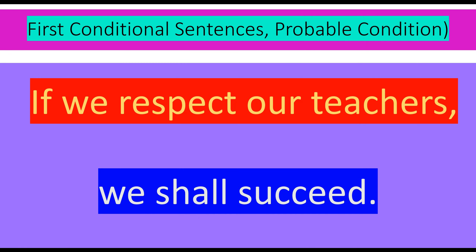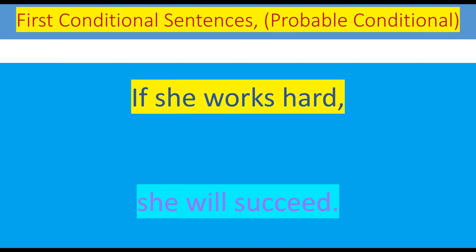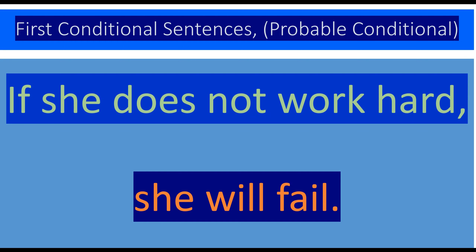For example: 'If we respect our teachers' — here 'if' has been written first, and a comma will be placed between the two parts of the sentence. 'If we respect our teachers, we shall succeed.' Another example: 'If she goes to Islamabad' — you can see the comma between the two parts. 'If she does not work hard, she will fail.' This is a negative sentence — 'does not' has been used with the first form of the verb.